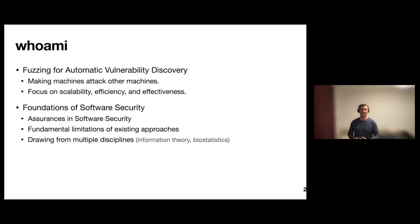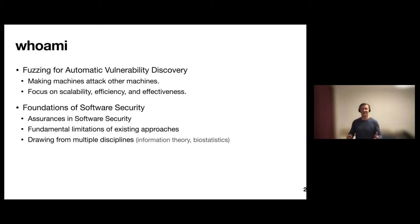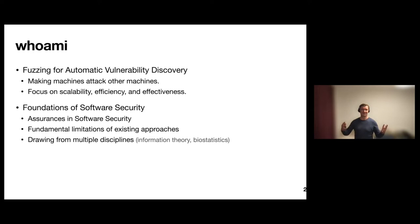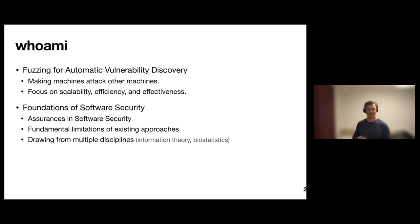The second part of my group is interested in the foundations of software security. We've heard a couple of talks here on providing guarantees in software security using techniques like verification. But these kinds of guarantees always come with assumptions — like that the compiler actually compiles the program for which we've proven properties into the right binary, which was the first talk by Deepak yesterday. And also things like: what happens if your machine doesn't execute the code reliably? Can we give some guarantees that we've tested the software system?